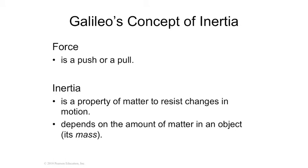Inertia is the idea that something that has mass doesn't like to change what it's doing — it's lazy. So if it's moving, it doesn't want to stop moving. If I throw a ping pong ball at you, you can catch it. If I throw a baseball, you probably catch it. If I throw a bowling ball, you probably should run. The more mass it has, the harder it is to start motion, but once it's moving, the harder it is to stop it. This idea is embedded in Newton's first law: an object in motion stays in motion, an object at rest stays at rest, unless acted upon by another force — because everything that has mass has inertia.